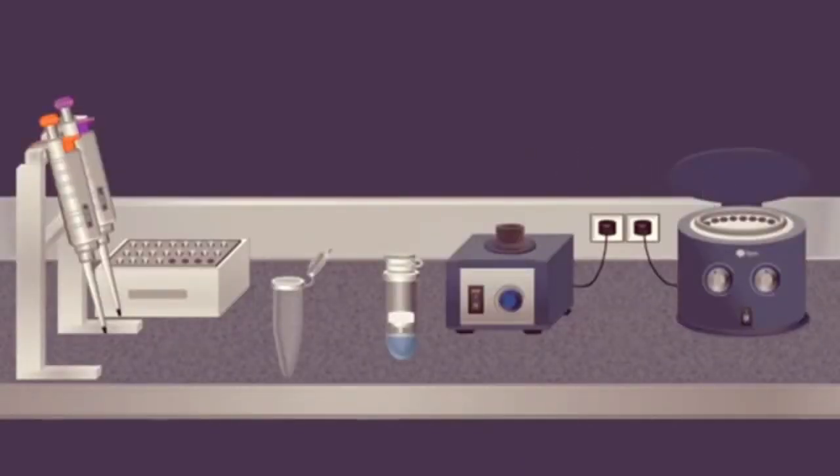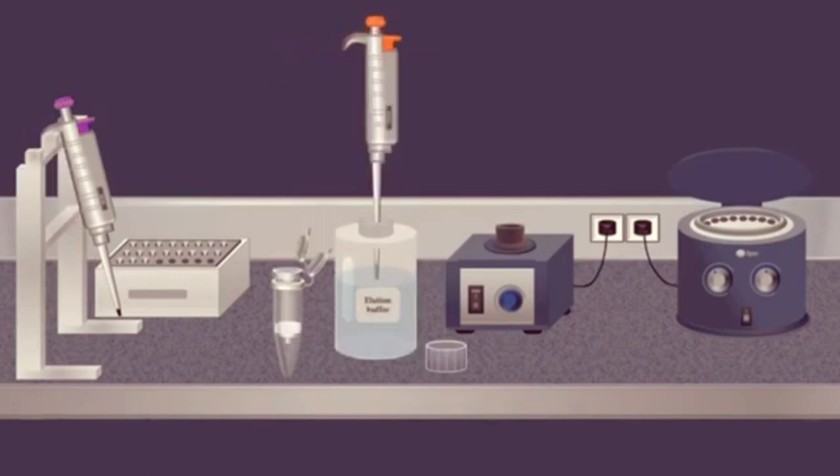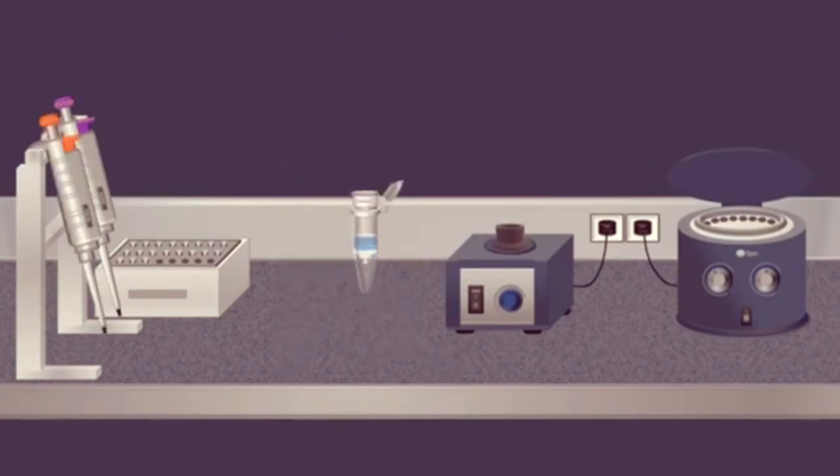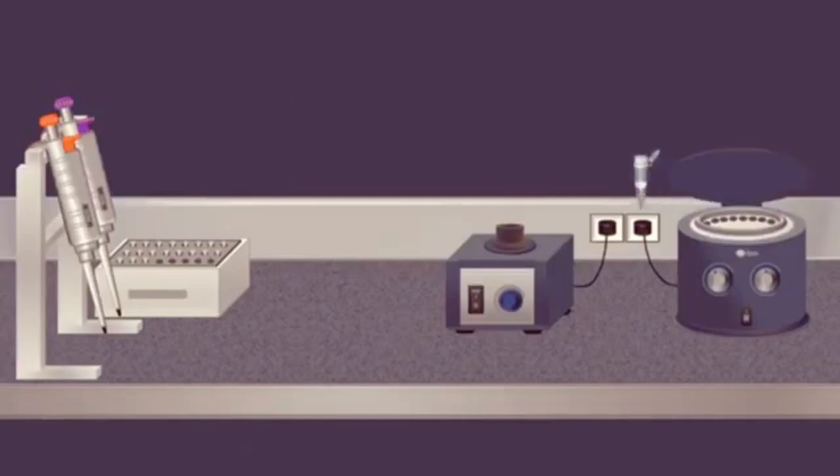Once the sample is washed, the column is placed in a clean microcentrifuge tube, and an elution buffer is added. Then, a centrifugation is carried out, forcing the elution buffer through the membrane. The elution buffer removes the viral RNA from the spin column. And a purified RNA, which is free of protein, inhibitors, and other contaminants is obtained.